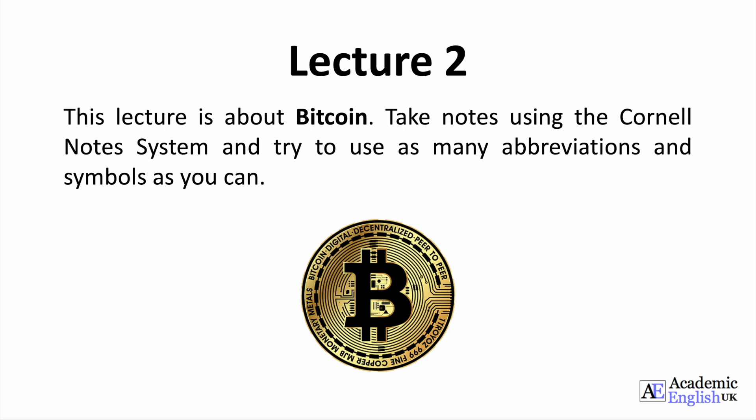Lecture 2. Hello. I'm going to talk to you today about Bitcoin. Bitcoin is a type of decentralized digital currency, also known as cryptocurrency. Formed in 2009, Bitcoins can be created, bought or sold, and are stored in a digital wallet.